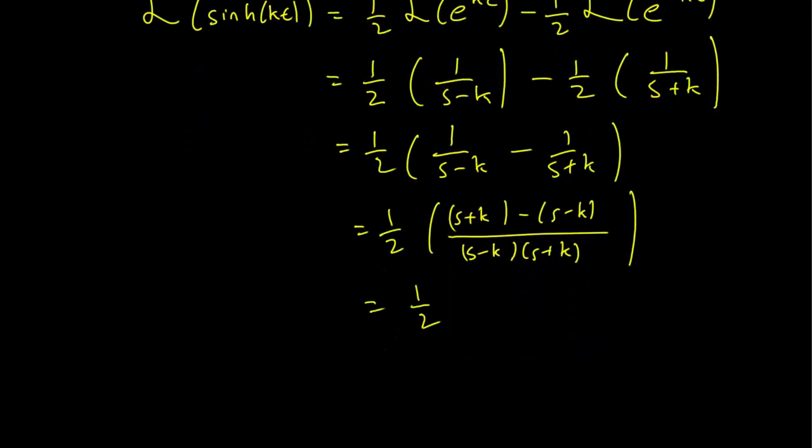But s minus k times s plus k is just the difference of squares. So we get s squared minus k squared in the denominator. And in the numerator, we get 2k, which cancels off with the half, which gets our value of k over s squared minus k squared as our value for the Laplace transform of sinh kt.